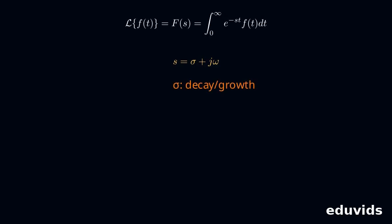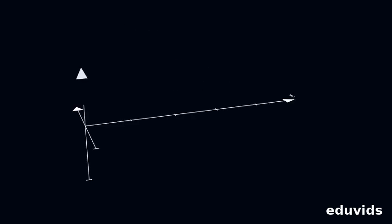Sigma controls exponential decay or growth, while omega governs oscillation. The e to the minus s t part is a three-dimensional decaying helix winding around the time axis. The integral finds how much of each complex exponential component is in f of t.